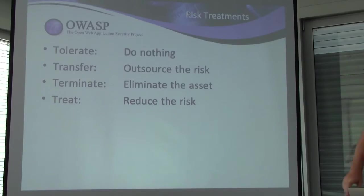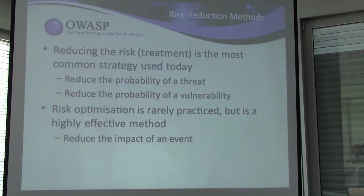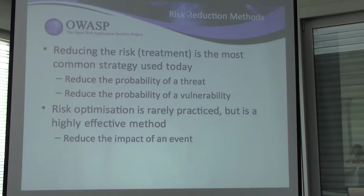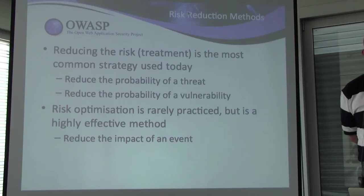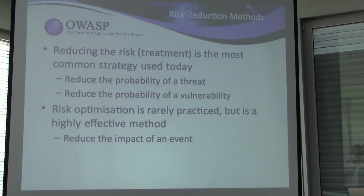The final treatment is to reduce the risk, which is the most commonly used approach. Risks are a combination of probability and impact — the likelihood of an adverse event occurring and the magnitude of its effect. So we've got possibilities of reducing either probability or impact. A common strategy might be to try to reduce the probability of a threat or reduce the probability of vulnerabilities occurring — for example, vulnerabilities in software.